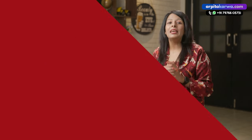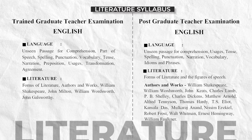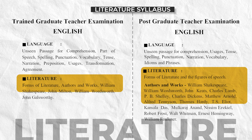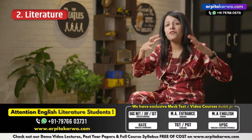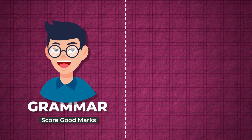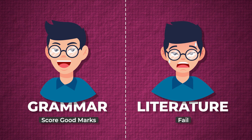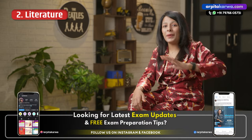Let us move on and look at Section Two, which is literature. I have displayed the literature syllabus on the screen. You may find a bit of difference in the literature syllabus of your TGT PGT exam since there is a slight difference across every government body, but most of the topics are common. What I have seen is that students usually fail the TGT PGT exam due to their poor hold on the literature section — while they score good marks in grammar, they fail to score well in literature.